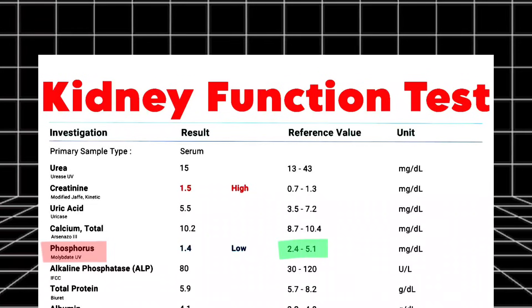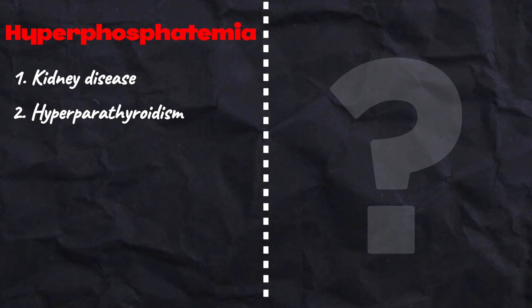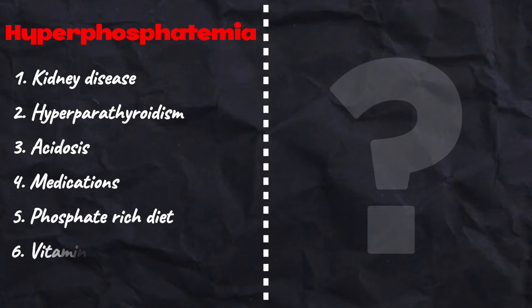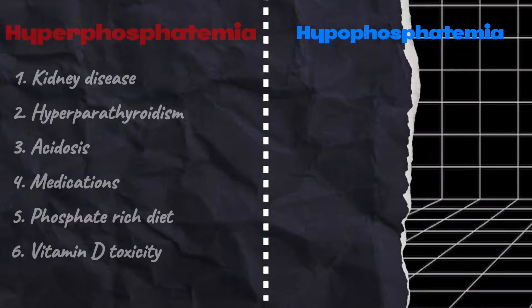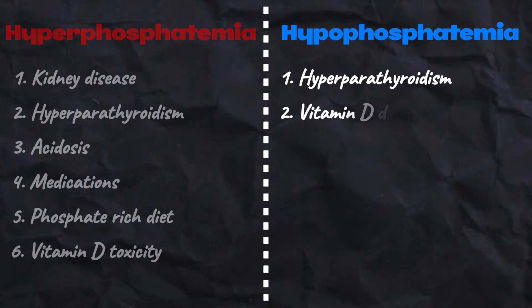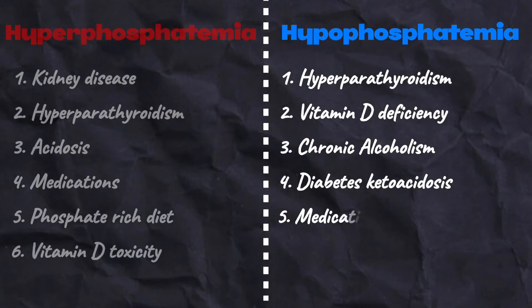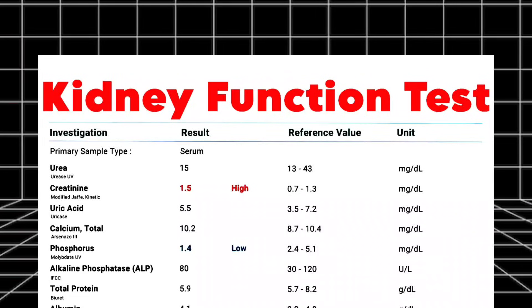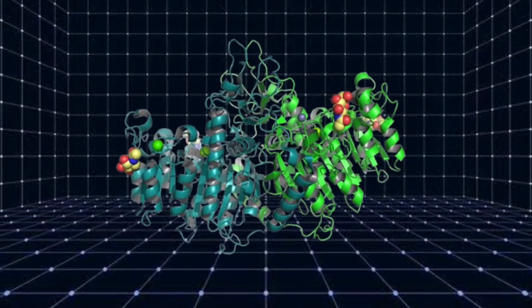Next in our report is phosphorus. The phosphorus level in the kidney function test helps diagnose and monitor kidney disease. The normal level of phosphorus in blood is between 2.4 to 5.1 milligrams per deciliter. High phosphorus in blood is called hyperphosphatemia, seen in kidney disease, hypoparathyroidism, acidosis, certain medications, a phosphate-rich diet, and vitamin D toxicity.